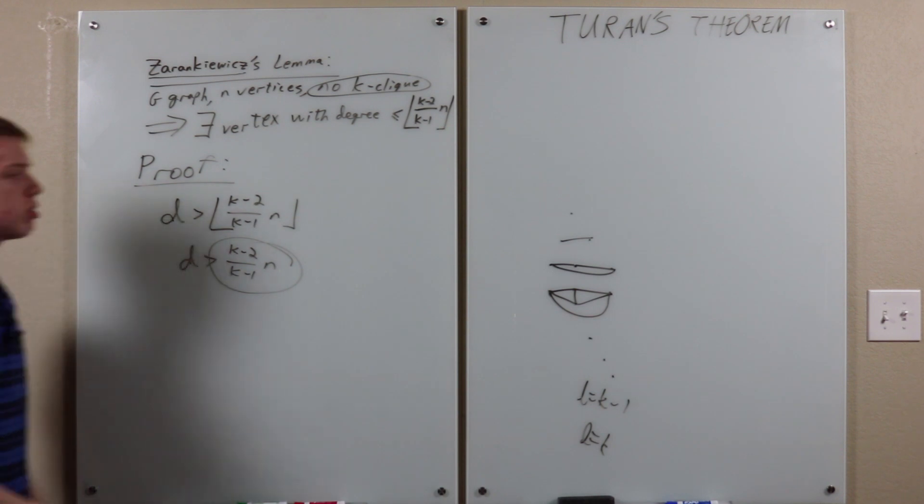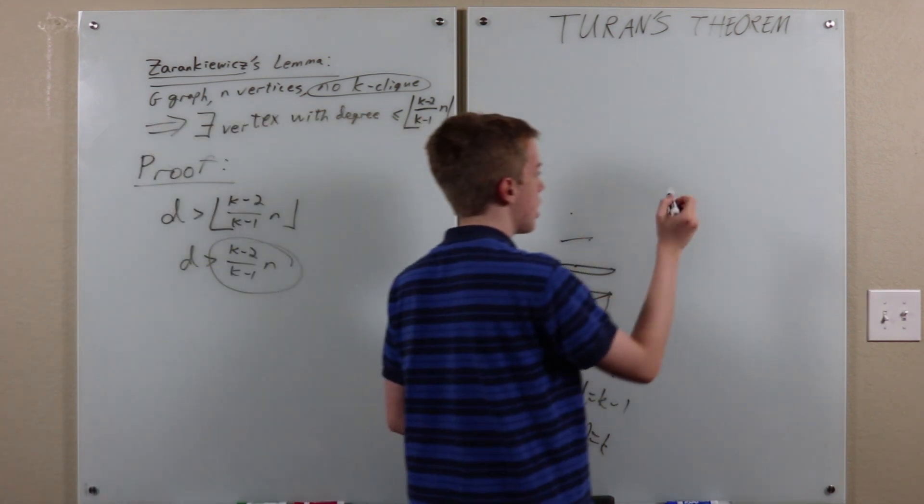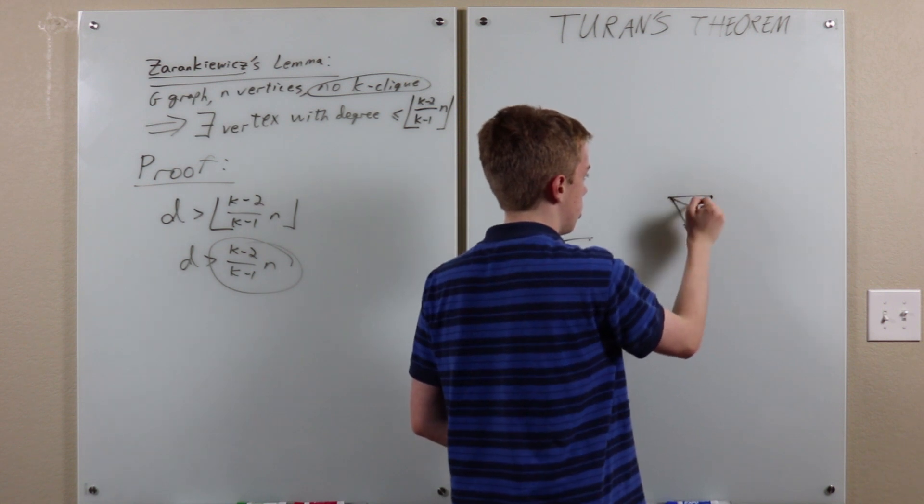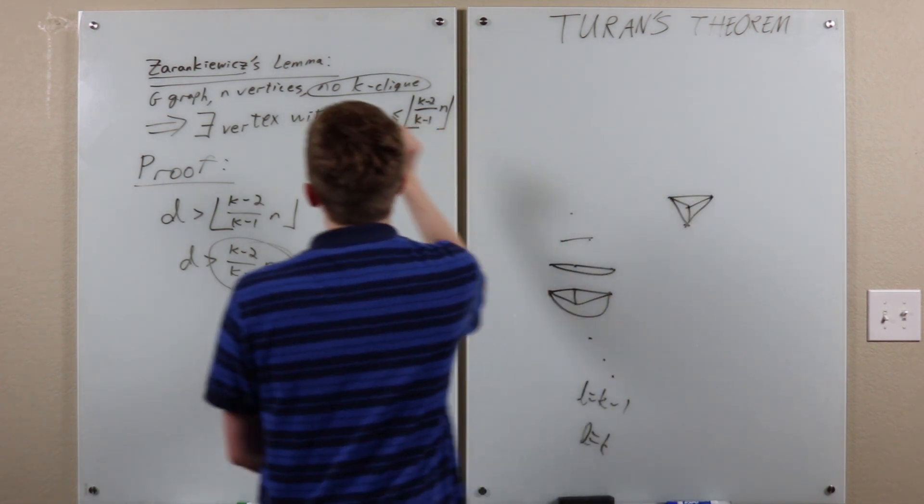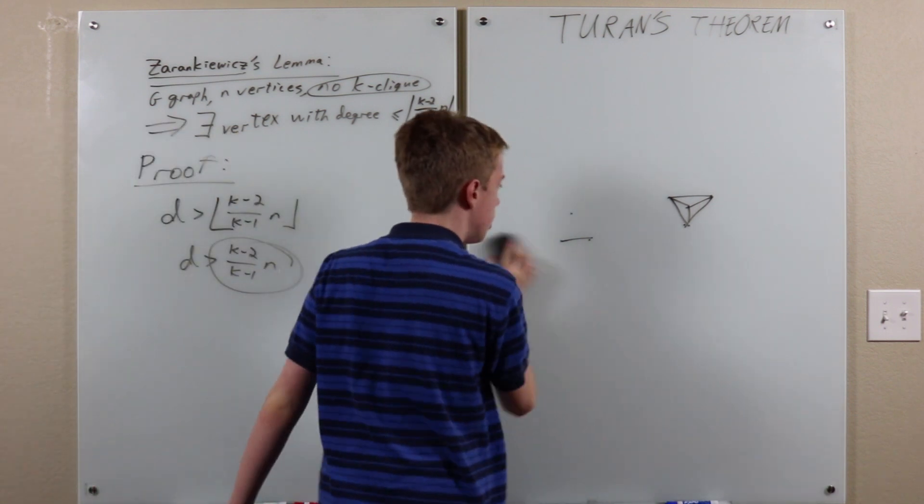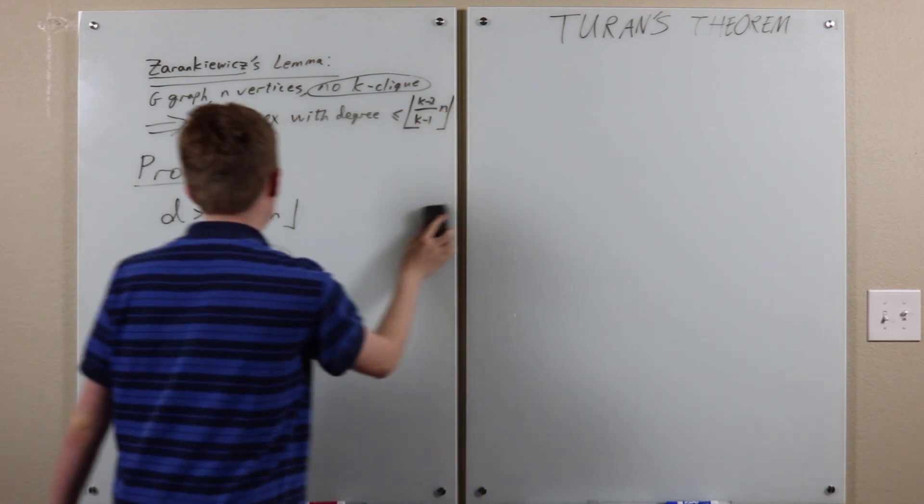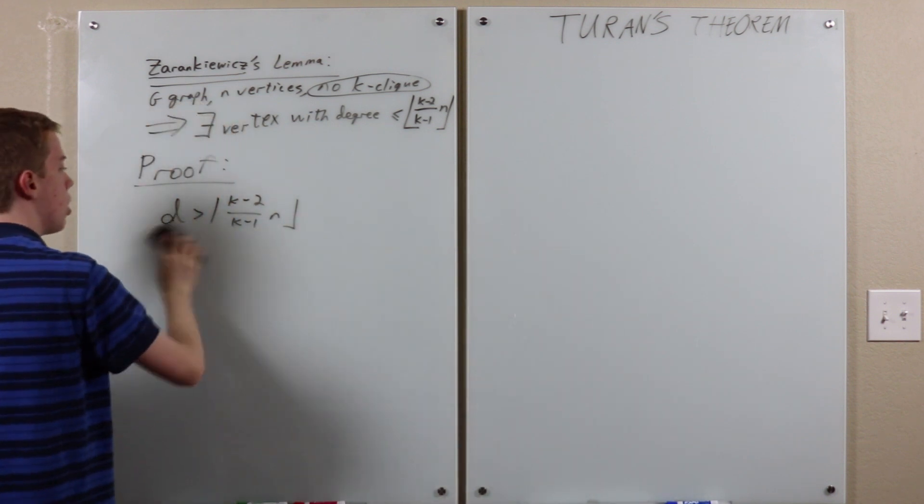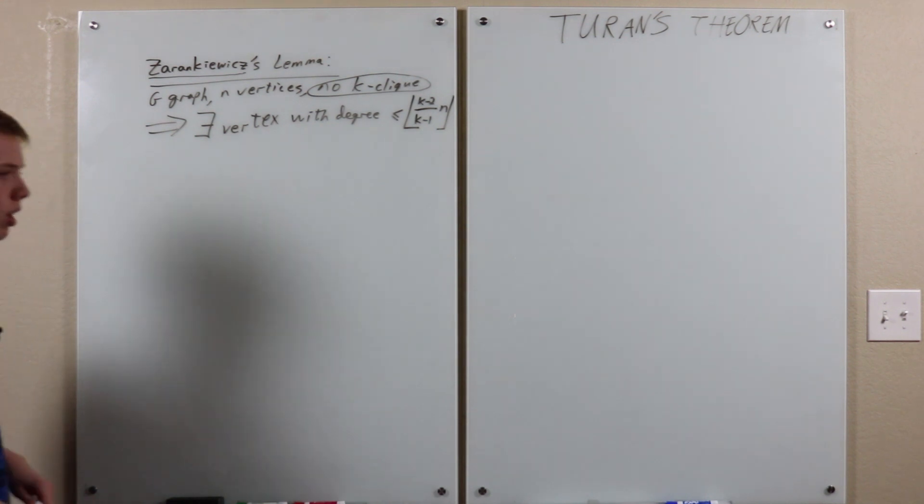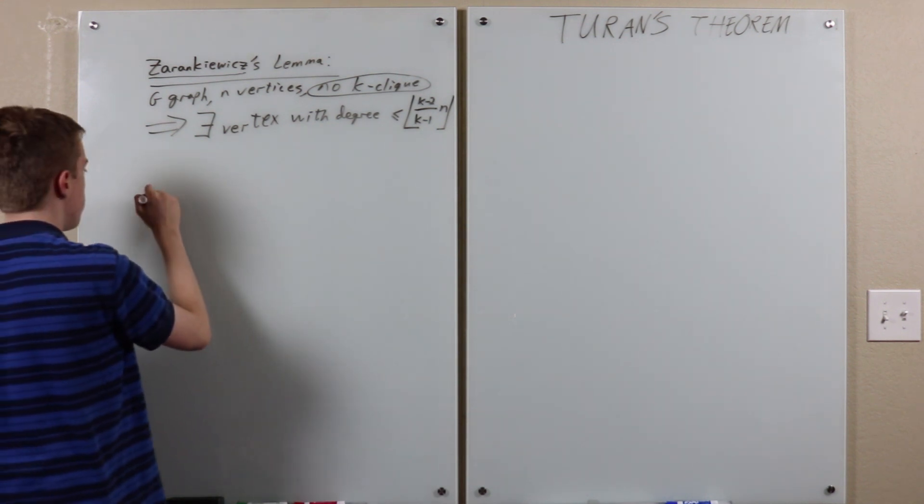So, basically we just said, okay, we can just build a K-clique in the stupidest way possible. So, we've proven this lemma. And this actually means that we are basically done. To prove this expression,